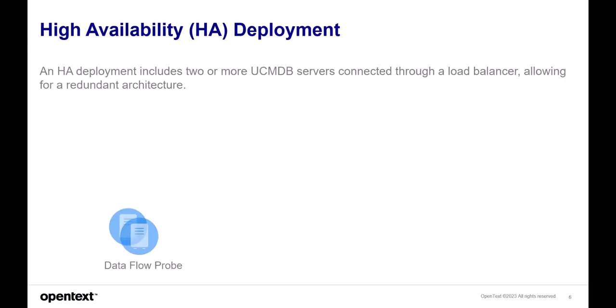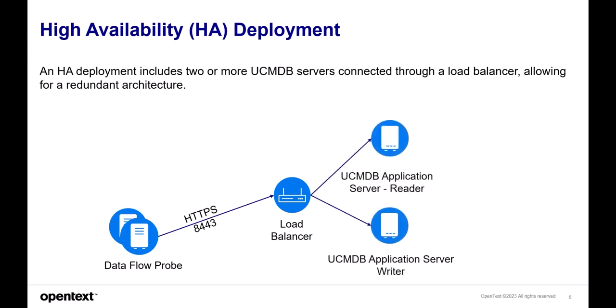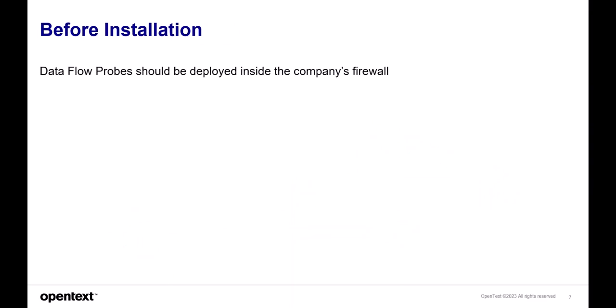In a high-availability deployment, there are normally two or more UCMDB servers in a cluster with a load balancer front end, allowing for a redundant architecture. In this case, the Dataflow Probes connect to a load balancer, probably through a firewall, via HTTPS to the writer VIP or virtual IP address on the load balancer, which is designated for the UCMDB application server that is a writer. The UCMDB Servers then also connect via JDBC to a highly available database cluster.